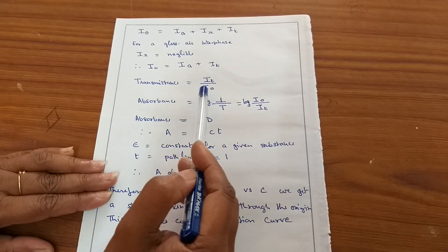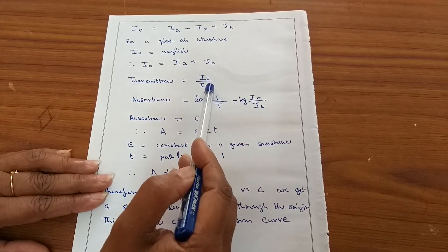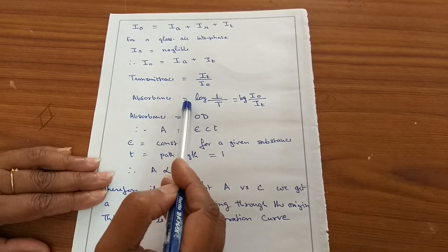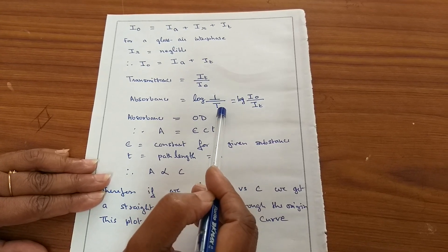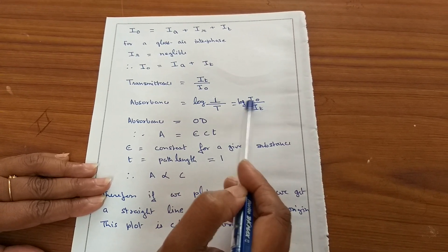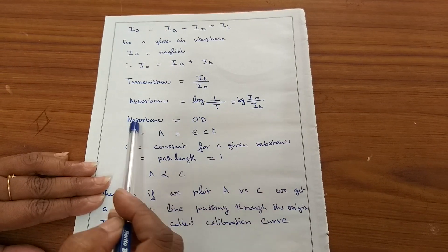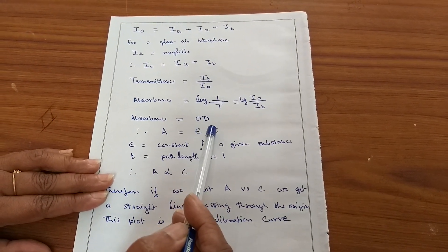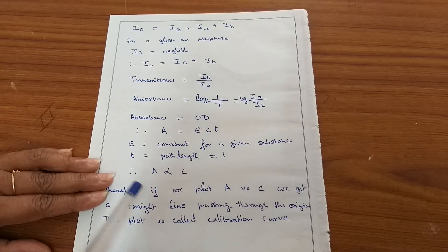Transmittance can be mathematically expressed as I_T divided by I₀. Absorbance is log(1/T), which equals log(I₀/I_T). Absorbance is nothing but the OD that we measure on the colorimeter.